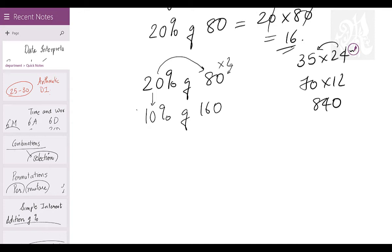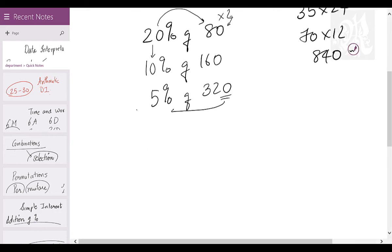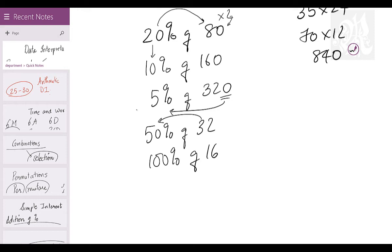Same answer still. If you want, you can pick out a 2 again and give it to that guy, so it's going to be 5% of 320. Or rather, let's do it the other way around. Take the 0 and put it here, so it's going to be 50% of 32. Or I can say it is 100% of 16, and 100% is the number itself, so 16 is the answer precisely. But we're not interested in the answer right now, we're just looking at the variations that a percentage can have. What is the advantage here? I'll explain that to you in a while.